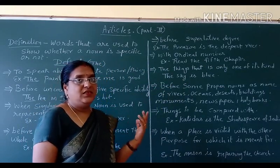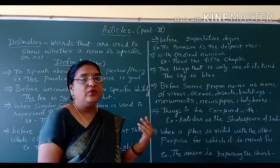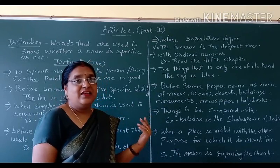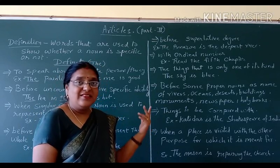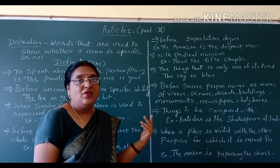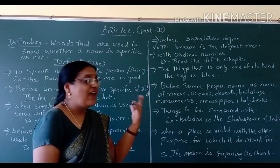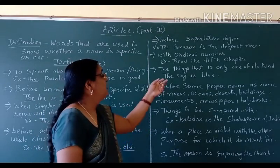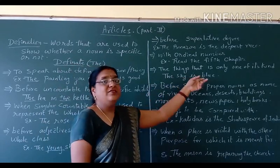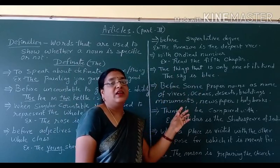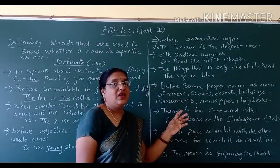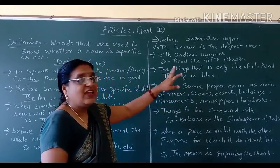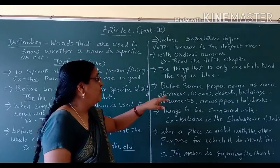The things that are only one of their kind: the earth, the moon, the sky, the sun. We are talking about heavenly bodies. The sky is blue — which is only of its kind. We can't change that, so we say 'the sky is blue.'